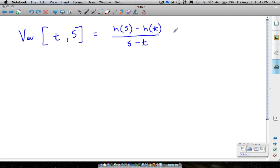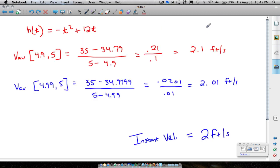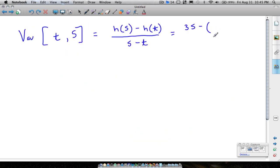Well, h of 5, we know is 35, minus h of t is just the function itself. And that function, I'm forgetting it, is negative t squared plus 12t. So negative t squared plus 12t divided by 5 minus t.